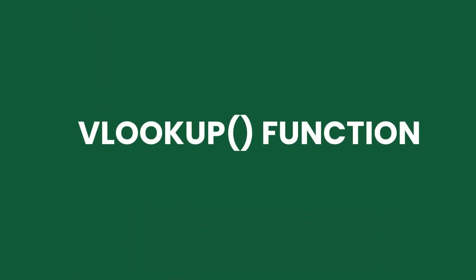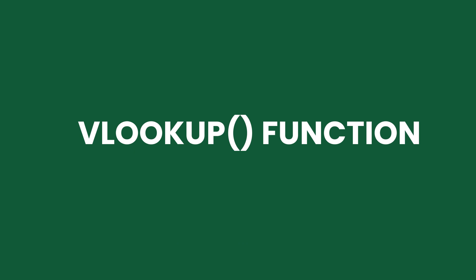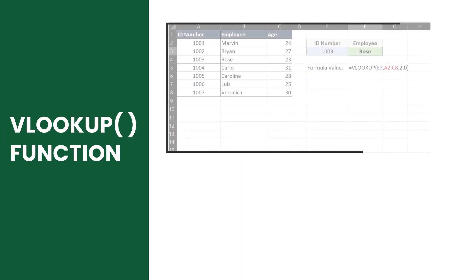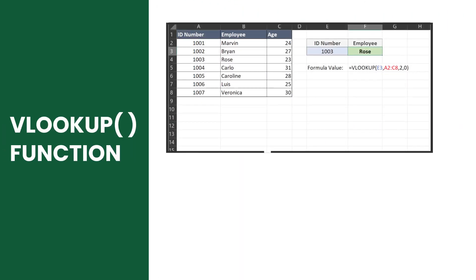The V in VLOOKUP means vertical. Hence, this function looks up information vertically on a specified table and returns information from a column. This function uses the syntax equals VLOOKUP, followed by its arguments enclosed in parentheses.